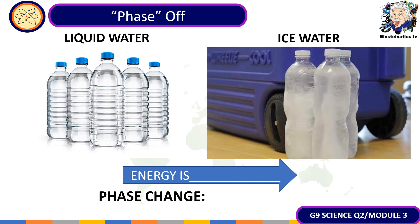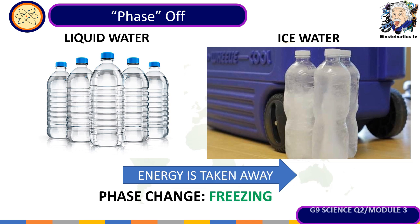Next example: liquid water turning into ice water. Identify the phase change and whether energy is absorbed or taken away. The correct answer is that energy is taken away — since it freezes, heat is definitely removed. As a result, from liquid state it is turned into a solid, in the process known as freezing.